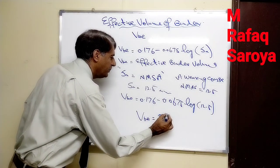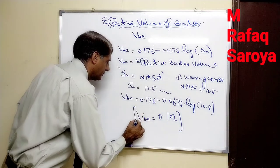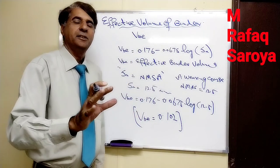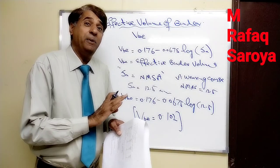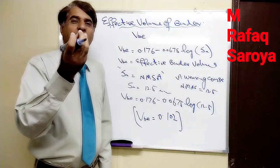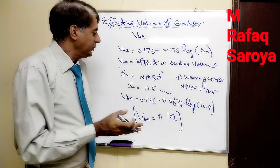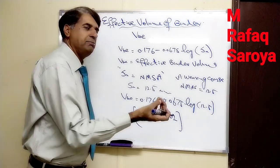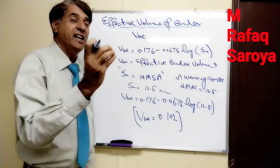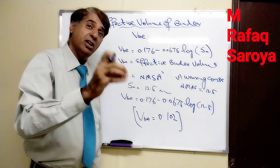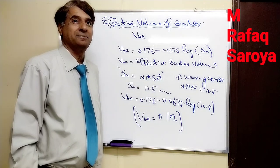After doing this calculation, VBE comes out to be 0.102. This value does not depend upon any design aggregate structure or any blend — it only depends upon the nominal maximum size of the aggregate. Therefore, VBE will remain constant for all blends.